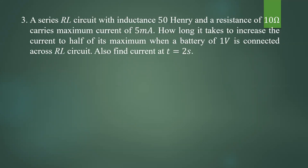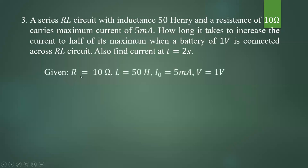What is the time at which current through the circuit becomes equal to 2.5 milliampere during the growth of current? It is given as how long it takes to increase — increase means the current is increasing. The value of L is given, value of R is given, maximum current I0 is given, and battery voltage V is equal to 1 volt. Let us write the given quantities: R is equal to 10 ohm, L is equal to 50 Henry, I0 is equal to 5 milliampere, V is equal to 1 volt.